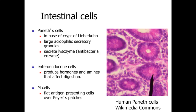We also have additional cells that are harder to identify. We have enteroendocrine cells — hormone-secreting cells within the walls of our digestive system — which produce hormones and amines that affect digestion, triggering digestive system glands locally or systemically to release materials that assist with digestion. We also have M cells as an example of antigen-presenting cells overlying Peyer's patches.